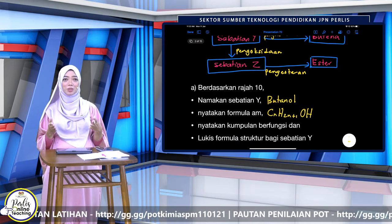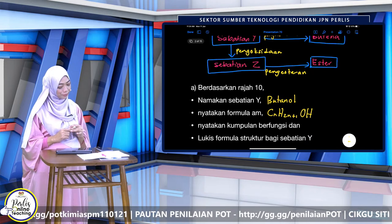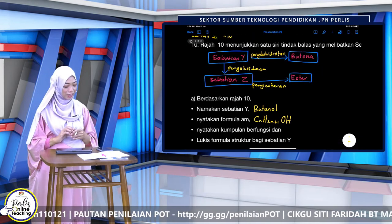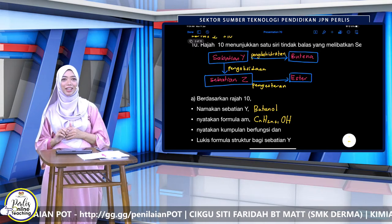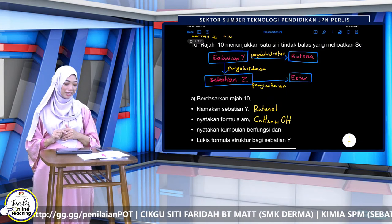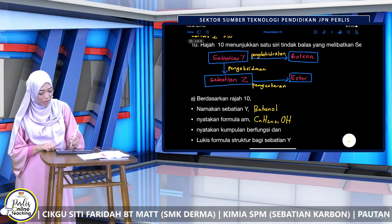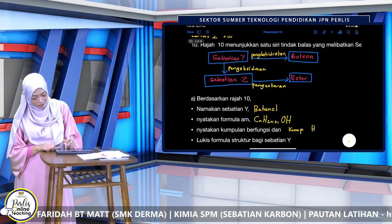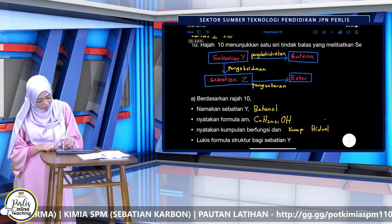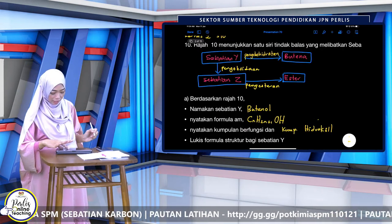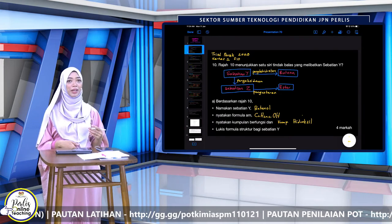Nyatakan kumpulan berfungsi bagi sebatian Y — alkohol ni. Jawapan: kumpulan hydroxyl. Awak tulis penuh lah. Bahasa Inggeris pun sama juga: hydroxyl — Y. Kalau bahasa Melayu: I. Markah dia 4. Soalan pun tanya 4 poin, jadi setiap satu poin satu markah. Lukiskan formula struktur bagi sebatian Y: kita tahu Y adalah butanol. Kita lukiskan dulu karbon, ada 4.